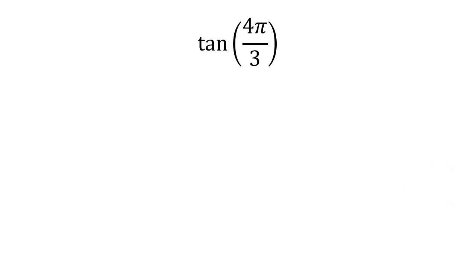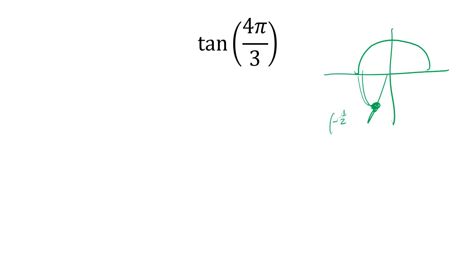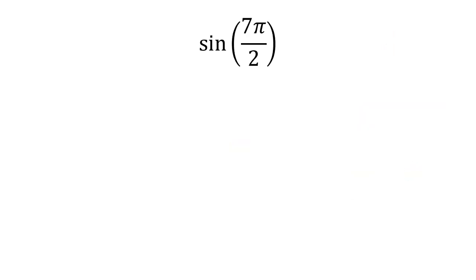Tangent of 4π/3. That's 3π/3, which is π, plus another π/3 — another 60 degrees — giving us a 60-degree reference angle in quadrant 3. Both coordinates are negative there, so the coordinate is (-1/2, -√3/2). We get -√3/2 divided by -1/2, which is a positive √3.